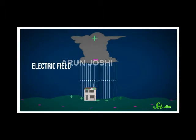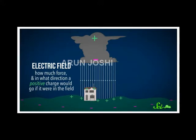Basically, an electric field describes how much force and in what direction a positive charge would go if it were in the field. In this case, upward toward the cloud. And when the difference in charges builds up enough, the first stage of lightning begins.